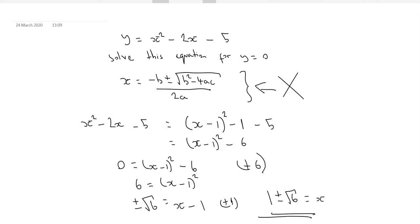We've got two solutions for x here. Now, if you were to use this method here, you would still get to the same result. There's no doubt about it. You would still end up getting 1 plus or minus the square root of 6.